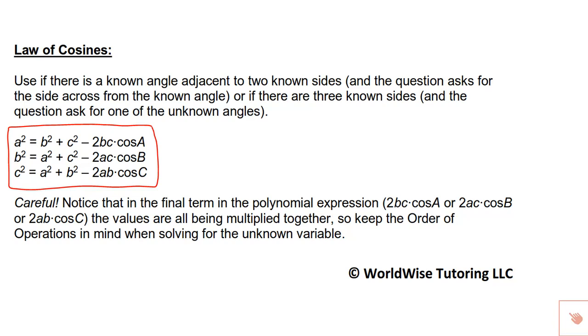Notice that if we start with side a we don't see the letter a again until the end in its angle form. Instead we see b c, b c. The same applies for the next rule. If we start with side b we do not see the letter b again until the end in its angle form, capital B. Instead we see a c, a c.